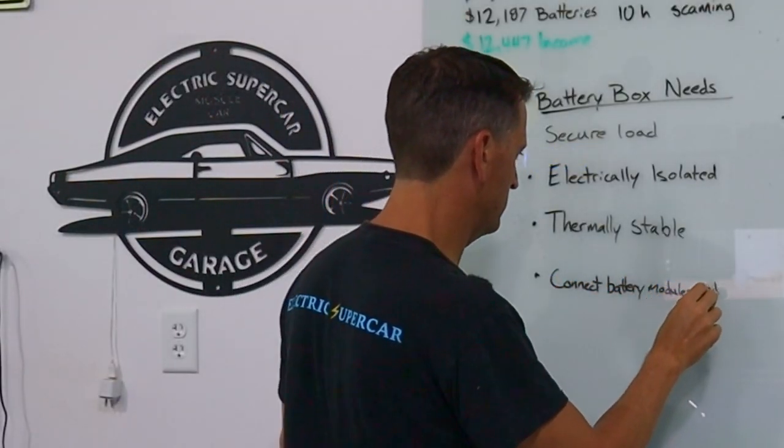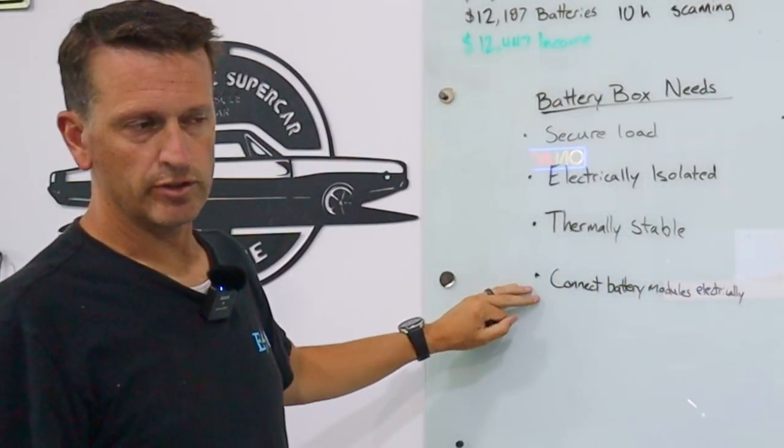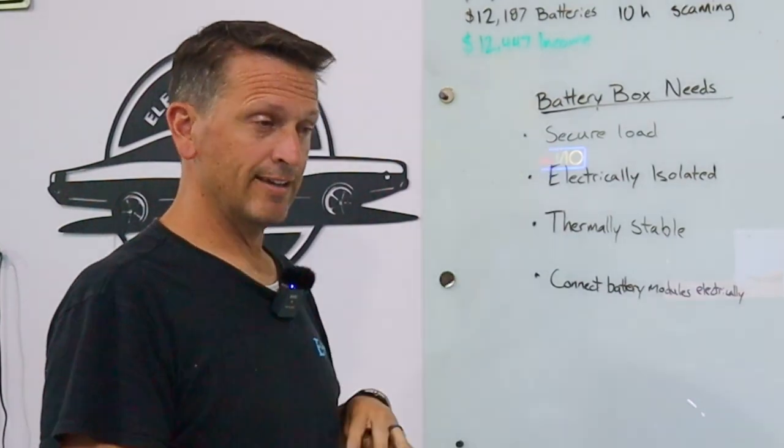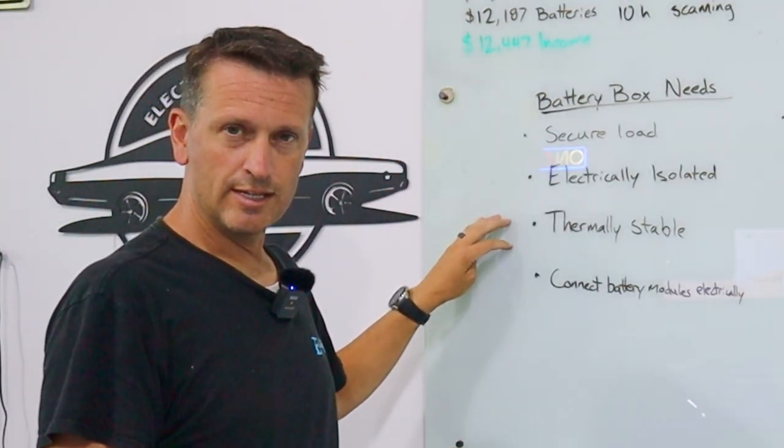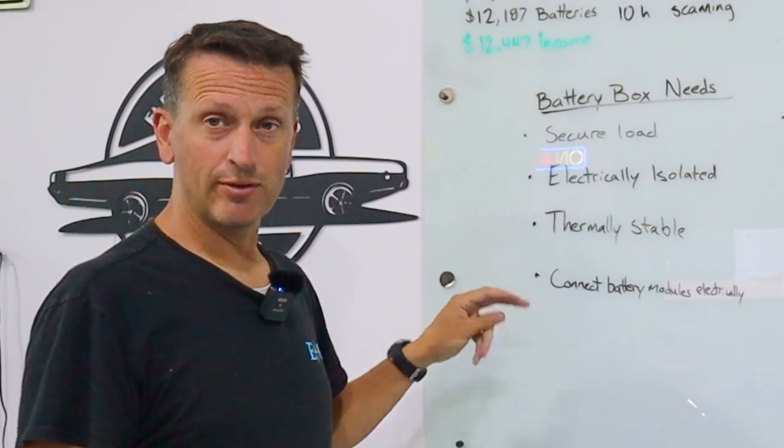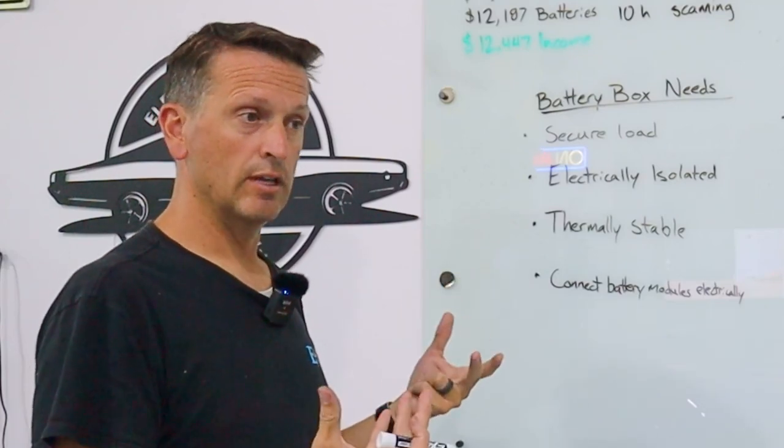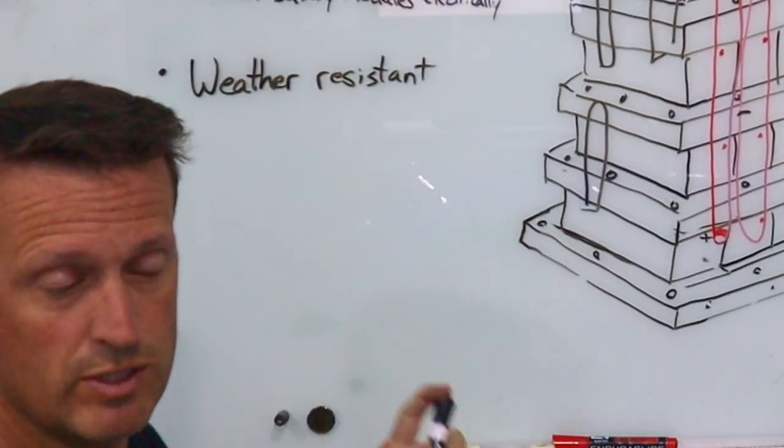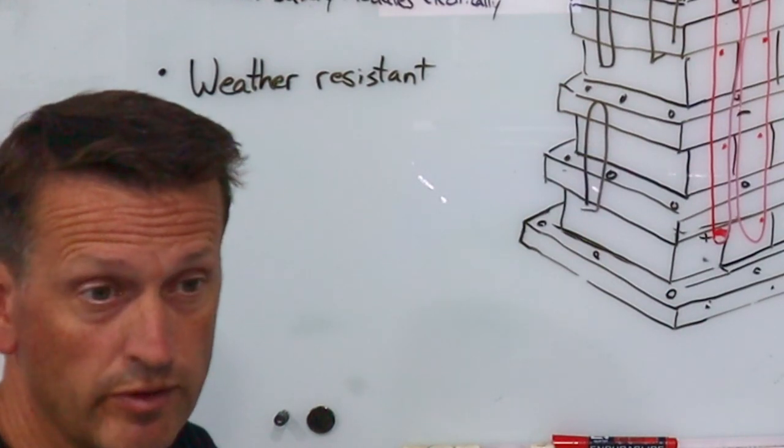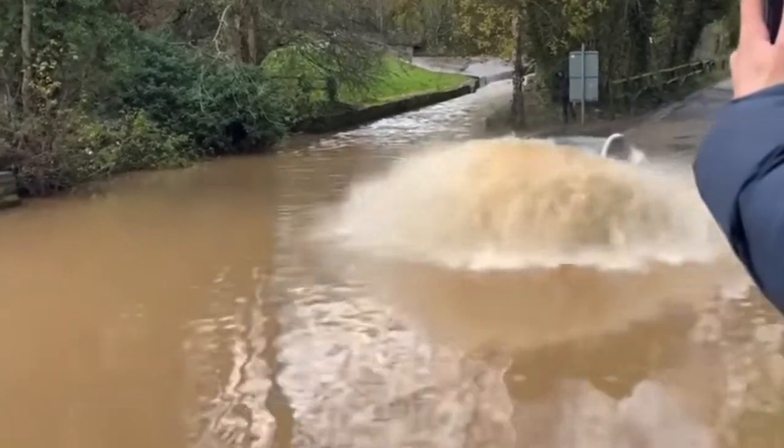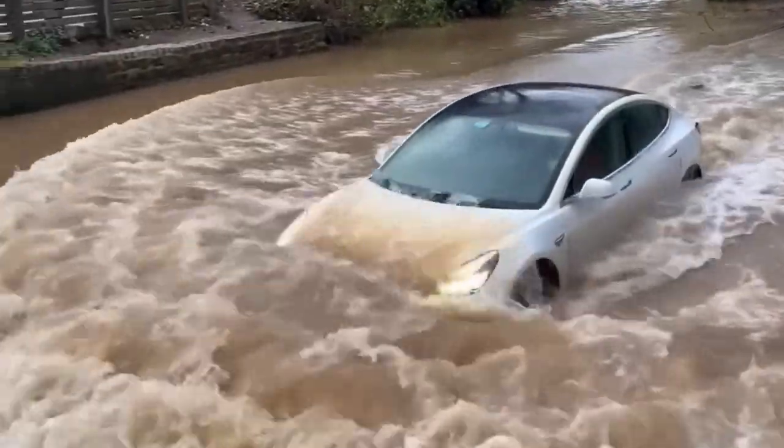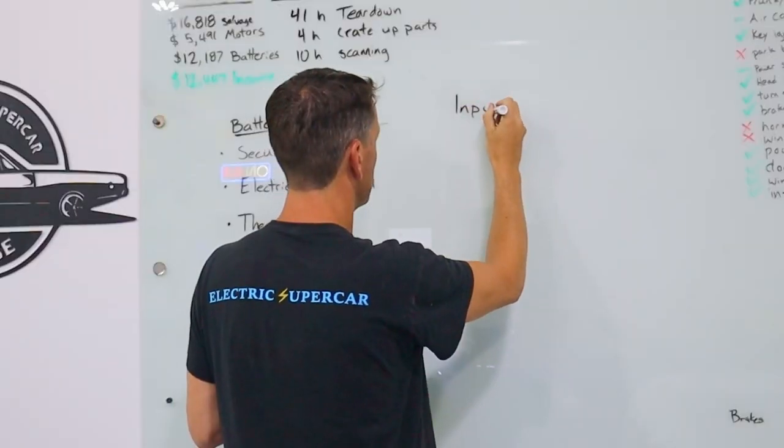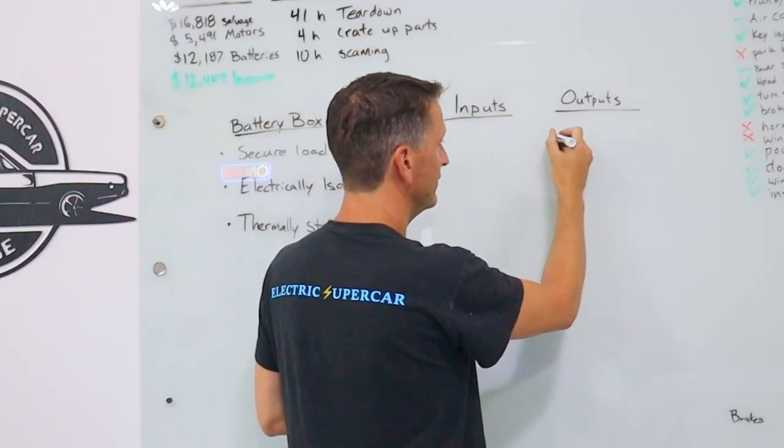I'm adding another one here. This is connect the battery modules electrically. We've got 500 pounds of batteries. We're going to secure them all. They're going to be electrically isolated from other systems. We're going to make sure that they're thermally stable. We also have to make sure that the batteries themselves are connected in a way that can actually get the voltage and amperage that we need. For weather resistant, we want it to be able to drive through puddles and not short out electrical connections. If it's a completely sealed system, water is one of the main ones. We want to make sure this is watertight.